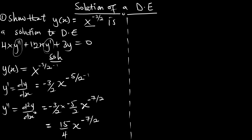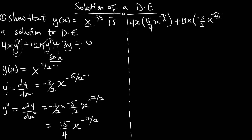Let's substitute into the differential equation: 4x · y'' which is (15/4) · x^(-7/2), plus 4x · y' which is (-3/2) · x^(-5/2), plus 3y. From the expression, our y = x^(-3/2).